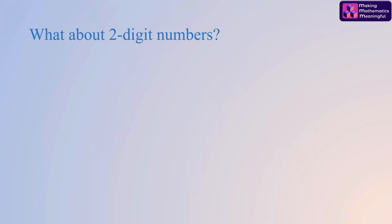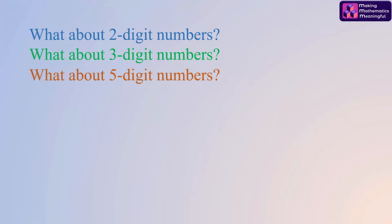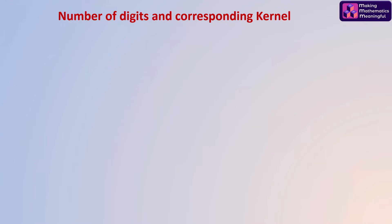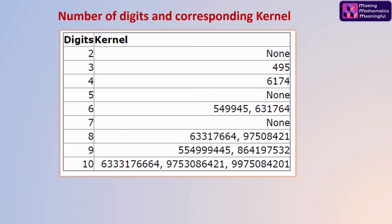What about two-digit numbers? What about three-digit numbers? What about five-digit, six-digit, seven-digit, eight-digit numbers and so on? The number of digits and the corresponding kernel is given in the following table. For a two-digit number there is no fixed kernel value — there is some looping, which I will discuss shortly. Similarly, for a five-digit number there is no kernel value, and for a seven-digit number there is again no fixed kernel value; loops are formed.